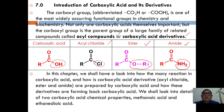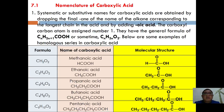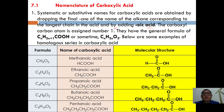We will also look at two carboxylic acid chemical properties: methanoic acid and ethanedioic acid. The systematic or substitutive name for carboxylic acid is obtained by dropping the final 'e' of the alkane name corresponding to the longest chain in the acid and adding 'oic acid'. The carboxyl carbon atom is always assigned as carbon number one. They have the general formula CₙH₂ₙCOOH, sometimes expressed as CₙH₂ₙO₂.